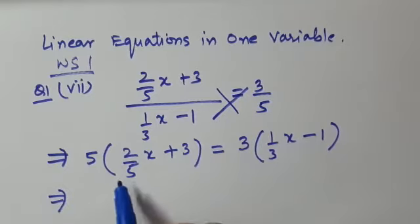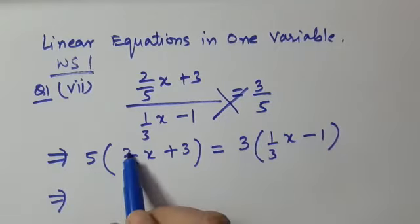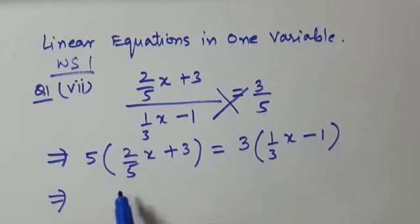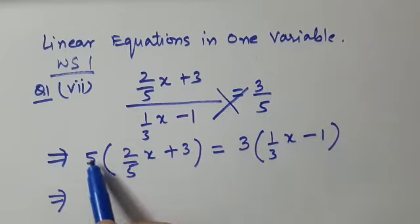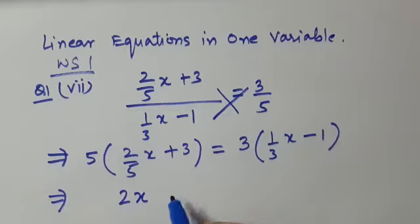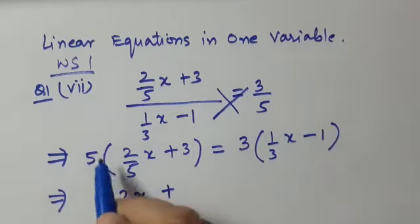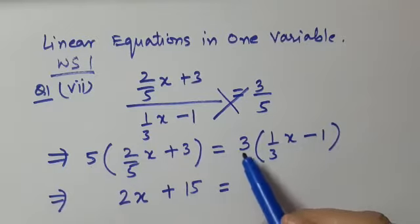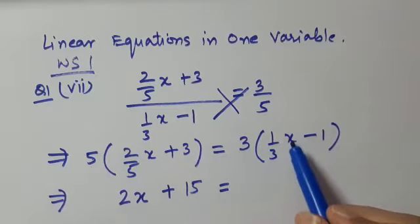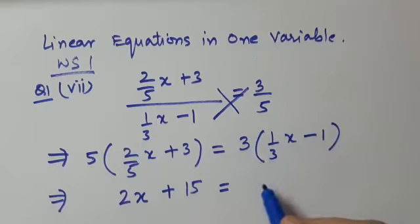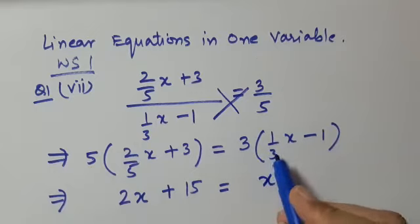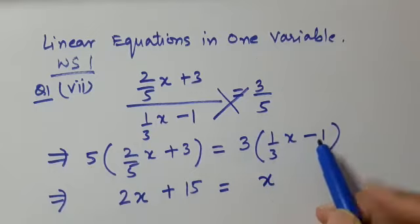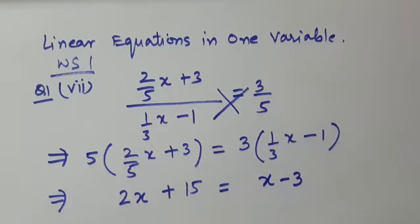Now when you multiply 5 with 2 upon 5x, the 5 and 5 get cancelled, so you are left with 2x, and 5 multiplied by 3 gives plus 15. Similarly, 3 multiplied by 1 upon 3x gives x, since 3 and 3 cancel, and 3 multiplied by minus 1 gives minus 3.